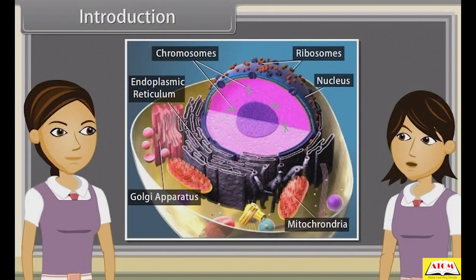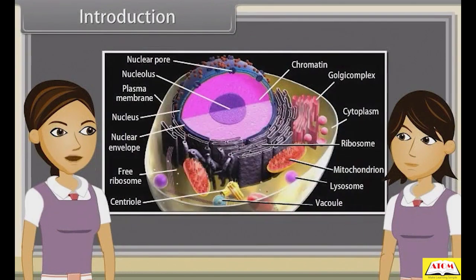I think we have completed all the topics. No Madhuri, there are some more topics to be learned. They are: structure of cytoskeleton, cilia and flagella, centrosomes and centrioles, nucleus, and microbodies. So come, let's know about them in this module.